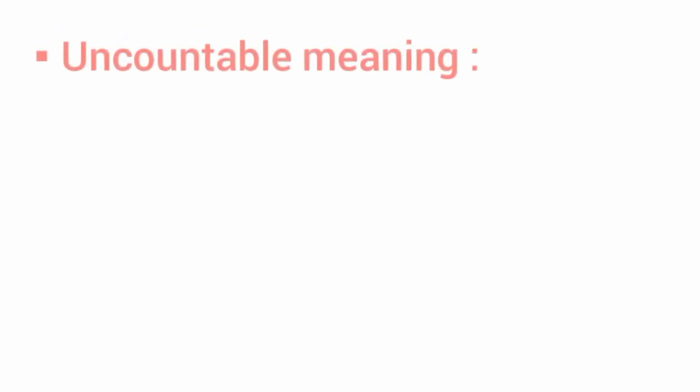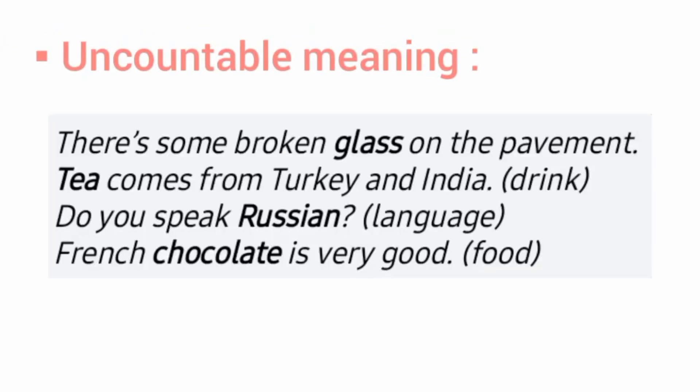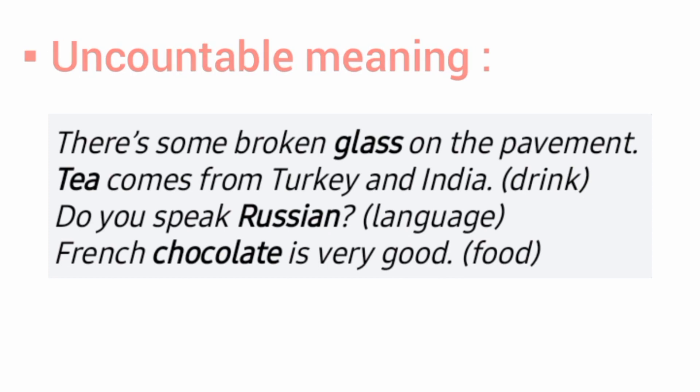Now, uncountable meaning — look at these examples: 'There is some broken glass on the pavement,' 'Tea comes from Turkey and India' (drink), 'Do you speak Russian?' (language), and 'Fresh chocolate is very good' (food). Drink, language, and food are uncountable. These examples show that nouns can be both countable and uncountable.